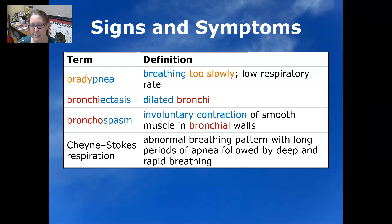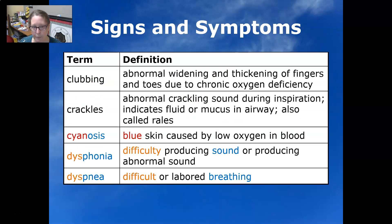Cheyne-Stokes respiration is an abnormal breathing pattern with long periods of apnea followed by deep and rapid breathing. Clubbing is an abnormal widening and thickening of the fingers and toes due to chronic oxygen deficiency; this is often seen in COPD.